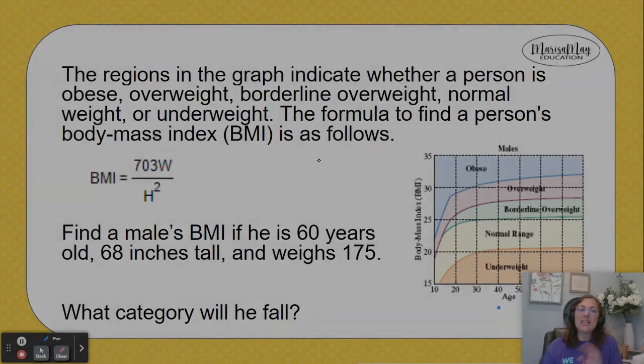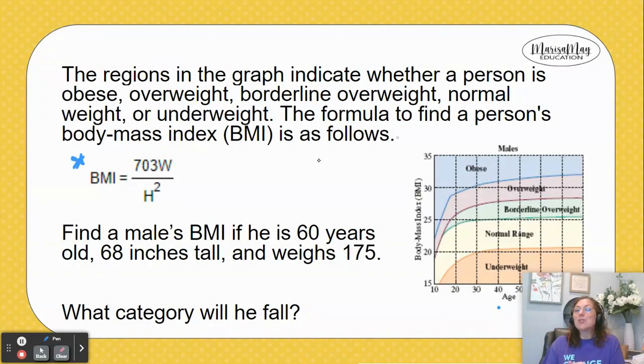In this video, we're going to be using an equation as well as a graph to answer some questions. The graph indicates whether a person is obese, overweight, borderline overweight, normal weight, or underweight. The formula to find a person's body mass index (BMI) is BMI = 703W/H².